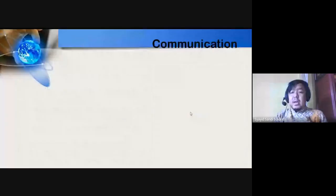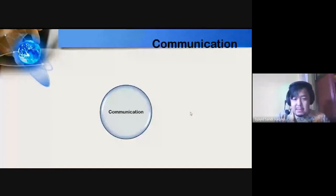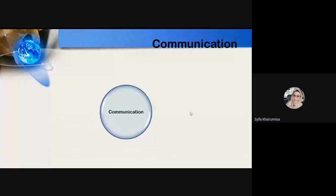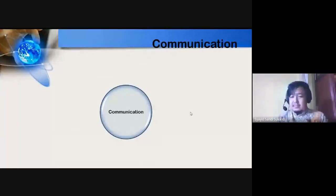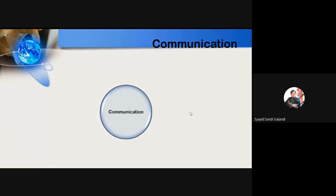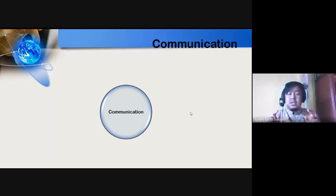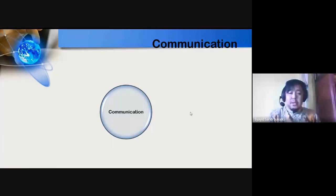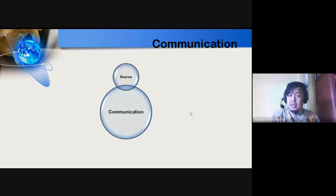Communication — I chose to represent it with a circle because communication is not angular; it is round, genuine. Communication starts from what is called the source. The source is a person who has a need to communicate. For example, if you are walking in a park and suddenly need to use the restroom, you become the source with a need to communicate — you ask a friend, 'Where is the toilet?'